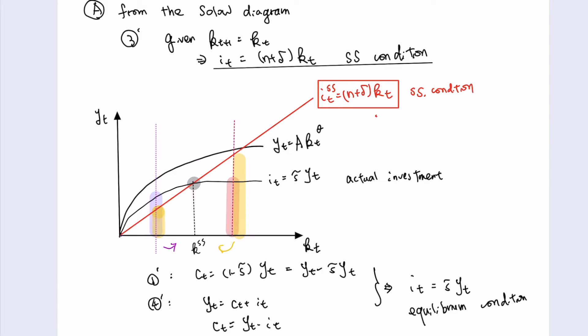We prove that k steady state is indeed a steady state: once we are there, we stay there, and if we deviate away from it, we return to it. To summarize how we use the Solow diagram: we draw the production line, the investment line (which equals savings, combining the equilibrium condition and household decision), and the steady state condition (degenerated from the law of motion). The intersection of the steady state condition and the equilibrium condition gives us k steady state.